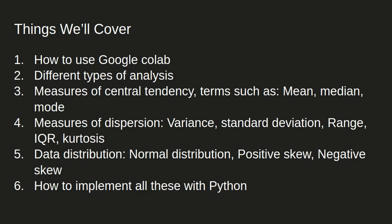In this course we'll learn how to use Google Colab, cover different types of analysis, and look at measures of central tendency such as mean, median, and mode. We'll also cover dispersions like variance, standard deviation, range, interquartile range, and kurtosis, as well as data distributions like normal distribution, positive skew, and negative skew. You'll also learn to plot bar graphs, pie charts, and other graphs using libraries like Seaborn, Matplotlib, and Pandas.